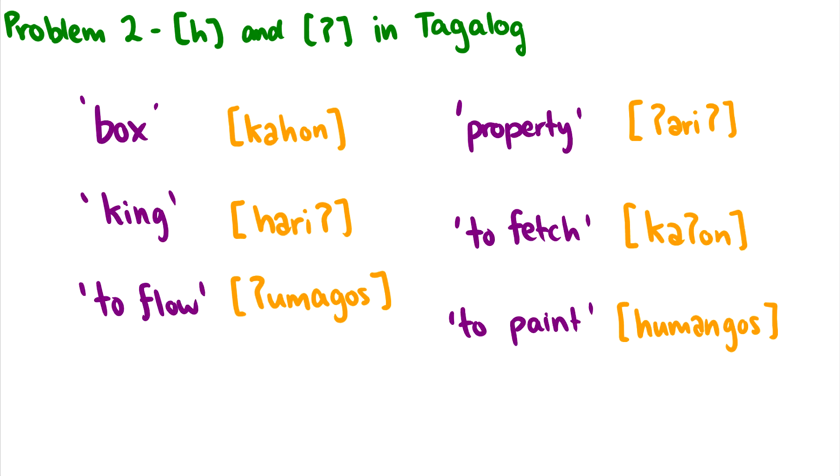But let's say I give you a problem in Tagalog. Well, on the left, I have the English translation. And then in the phonetics, I have how they're pronounced. So for instance, box is [kahon], king is [hariʔ], to flow is [ʔumaŋgos], property is [ʔari], to fetch would be [kaʔon], and to paint would be [humaŋgos].